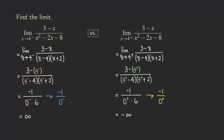Both limits do not exist, but because we can tell where the function is heading, we still write down the two results. It doesn't mean there are actual numbers — it's really just saying that when x approaches 4 from the left, the function gets larger and larger in the y direction, and when x approaches 4 from the right, the function goes down, getting numerically larger and larger in the negative direction.